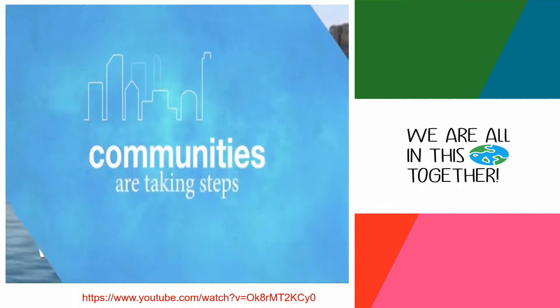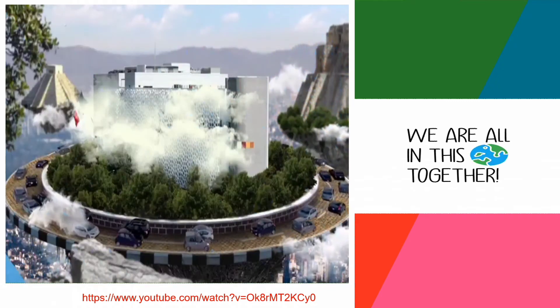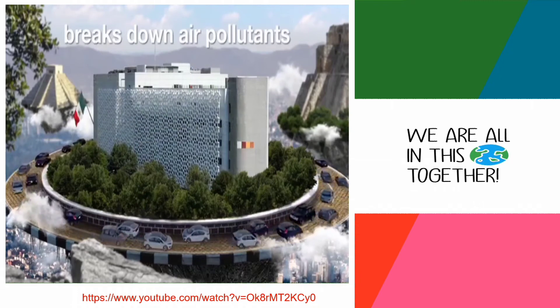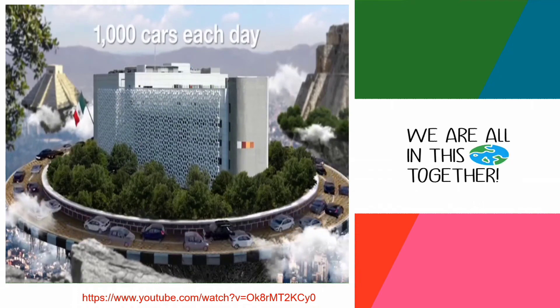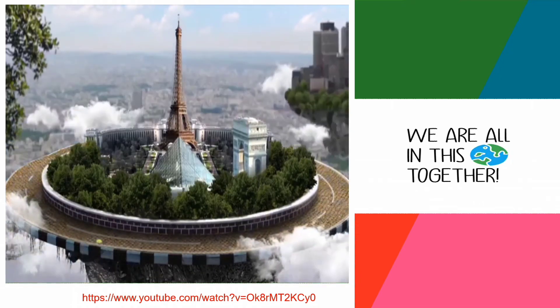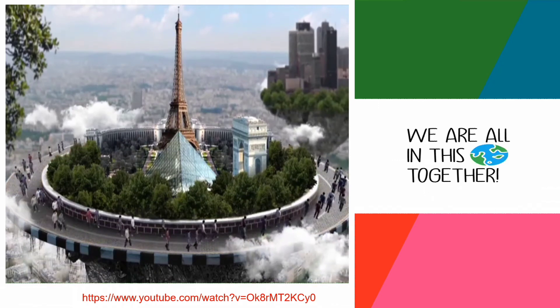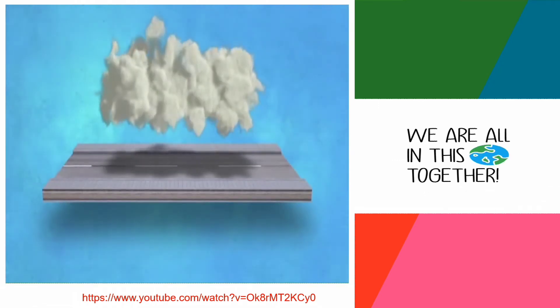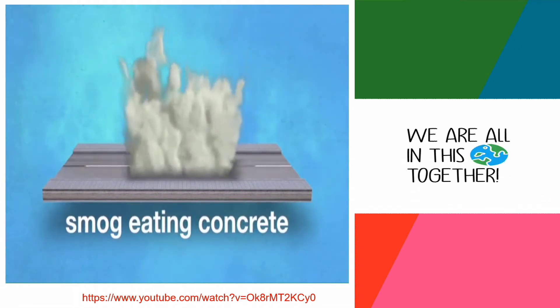Communities large and small are taking steps. A new public building in Mexico City has an exterior that breaks down air pollutants, erasing the effects of 1,000 cars each day. Paris installed street tiles that harvest energy from foot traffic. Other cities are paving streets with smog-eating concrete and sidewalks with recycled materials.